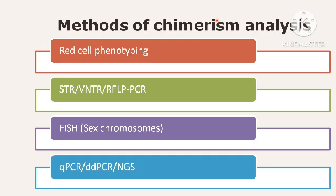There are several techniques used in chimerism analysis. Non-molecular methods include red cell phenotyping. Cytogenetic-based methods include FISH. Molecular methods are STR-based, VNTR-based, or RFLP-based PCR followed by fragment analysis. Advanced methods include qPCR, ddPCR, and NGS. STR-PCR is a PCR-based technique that uses short tandem repeat markers to identify genetic differences between donor and recipient cells. FISH uses fluorescent probes to identify chromosomal abnormalities, particularly in sex chromosomes.